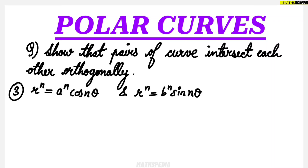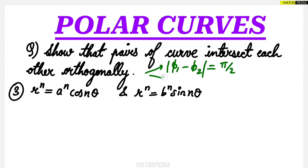We are taking up the third question here: r^n = a^n cos(nθ) and r^n = b^n sin(nθ). We will be doing both equations simultaneously. We have to prove that the pairs of curves intersect each other orthogonally. Two methods are given. The first method is to find φ₁ and φ₂ values and find the difference between those two. If we get the difference as π/2, then we can say the curves intersect each other orthogonally.